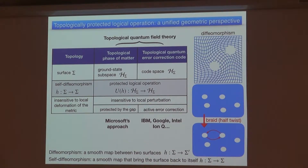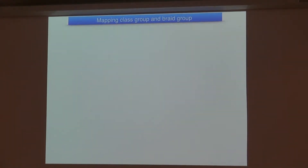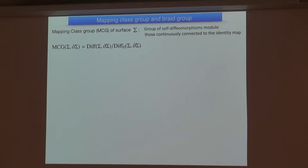As a very familiar example, one case is this braid or half-twist of two punctures, which exactly maps the surface back to itself. To keep track of what's happening, you can adjust the reference line before and after the operation. Now we know how to do the logical operation of a topological quantum computer. Let me introduce the central concept in this talk, which is called the mapping class group of a surface. It's a group consisting of all these diffeomorphisms modulo trivial deformations connected to the identity map, which is like a local deformation. The elements of this mapping class group are called modular transformations.